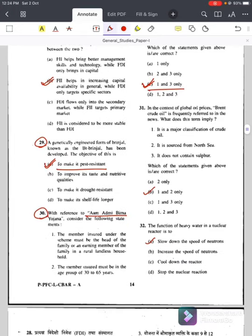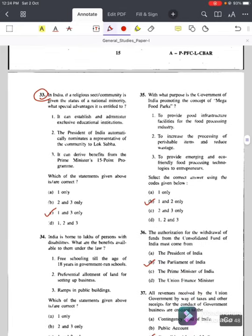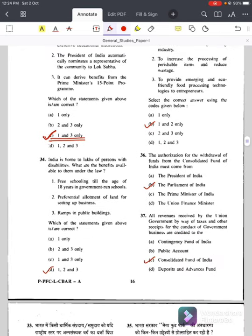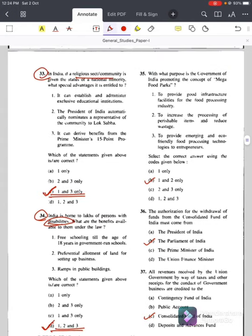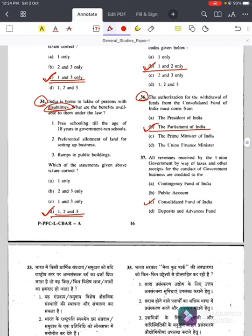Question twenty-eight, FDI/FII, answer is B. Question number twenty-nine, genetically engineered form of brinjal, answer is A, to make it pest resistant. Question number thirty, Aam Aadmi Bima Yojana, answer is C, one and three. Question number thirty-one, Brent crude oil, answer is B, one and two. Again in 2020 you will see one question on crude oil. Question number thirty-two, function of heavy water, answer is A, slow down the speed of neutrons. Question number thirty-three, religious sects, answer is C, one and three only.